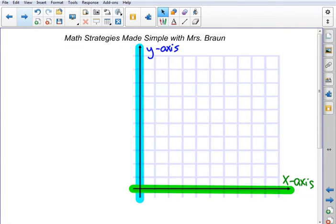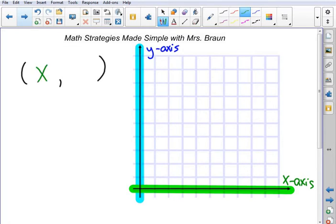When we look at graphing, our points are always written in coordinate pairs, which means we're going to have parentheses with two values separated by a comma. So it's written in the form of (x, y). Let's take a look at an example.